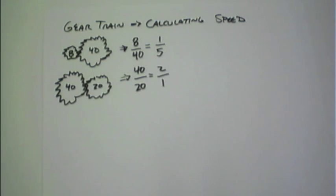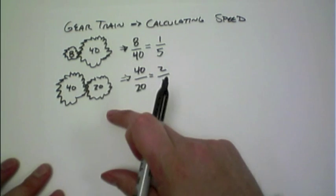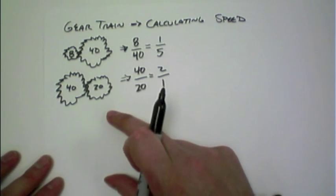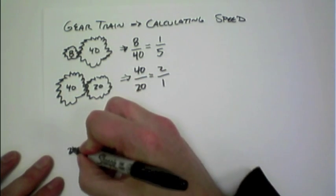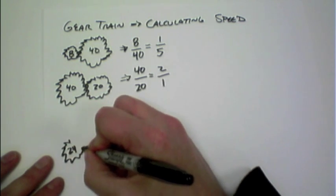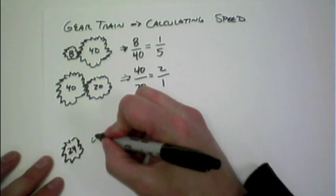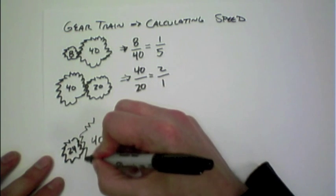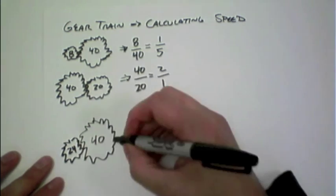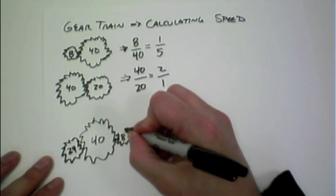So what happens when we actually have a much larger gear train than just two together? For instance, what happens if I have a 24-tooth gear connected up to a 40-tooth gear, finally connected up to a small 8-tooth gear?